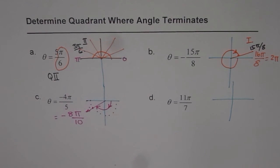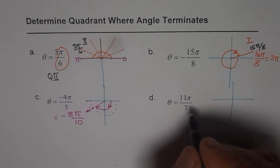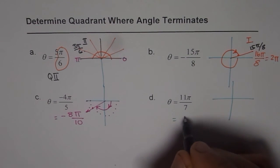The last one is 11 pi by 7. So the strategy here is, we can write this as 22 pi by 14, correct?